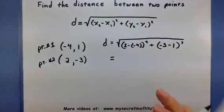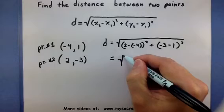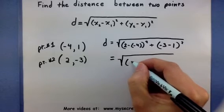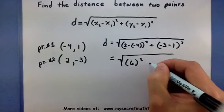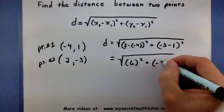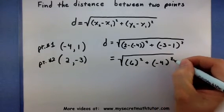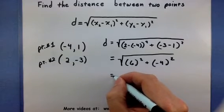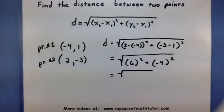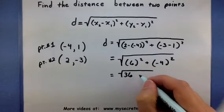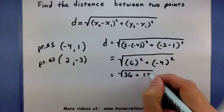I recommend starting from the inside and working your way out, just to make sure you don't make an error. So 2 minus a minus 4 becomes a positive 6. Negative 3 minus 1 gives us a negative 4. And of course, both of these numbers get squared. So 6 squared gives us a 36. Negative 4 squared gives us a 16.